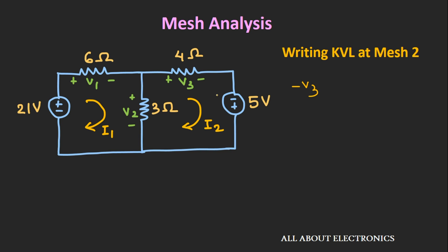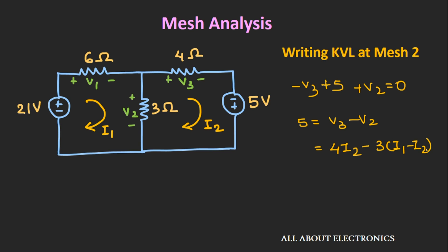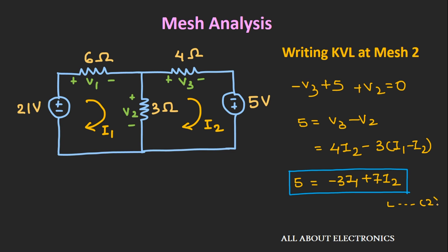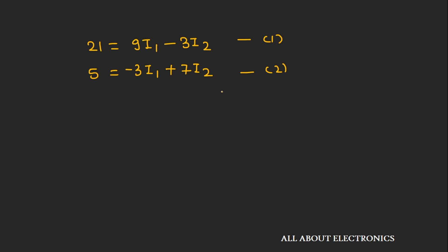Similarly, writing the KVL equation for mesh number 2, we get −V3 + 5 + V2 = 0, or 5 = V3 − V2. Voltage V3 is 4×I2, and V2 is 3×(I1 − I2). Simplifying gives 5 = −3I1 + 7I2, which is equation number 2. Multiplying equation 2 by 3 and adding to equation 1 gives I2 = 2A, and substituting back gives I1 = 3A.